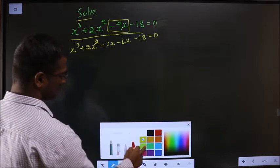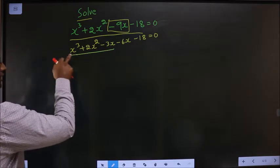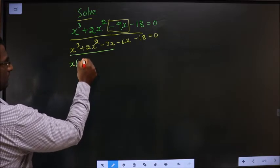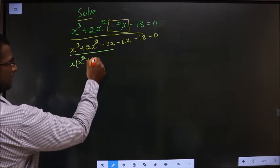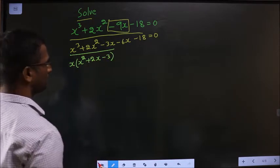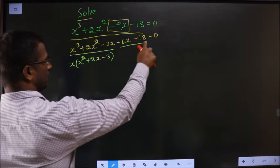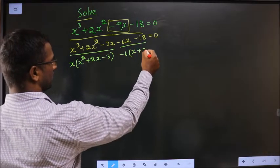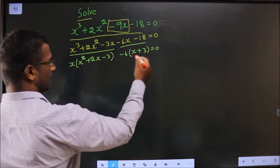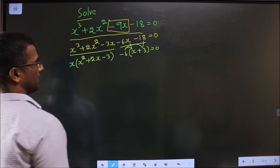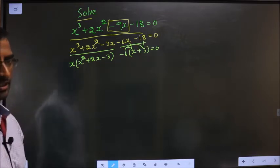Next, what can I take common from these? From the first three terms, x square, so left with x square, here left with 2x, and here left with minus 3. And from these two I can take minus 6 common, so I will be left with x plus 3. In case of doubt, multiply and confirm it. You will get the same thing.